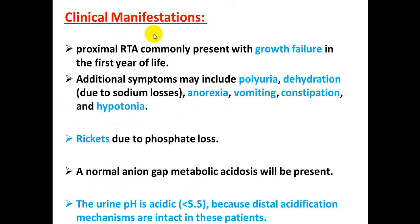Clinical manifestations of proximal RTA: the patient commonly presents with growth failure in the first year of life. Additional symptoms include polyuria, dehydration, anorexia, vomiting, constipation, and hypotonia. Rickets due to phosphate loss may also be a clinical manifestation. Normal anion gap metabolic acidosis will be present. The urine pH is acidic, less than 5.5, because distal acidification mechanisms are intact.